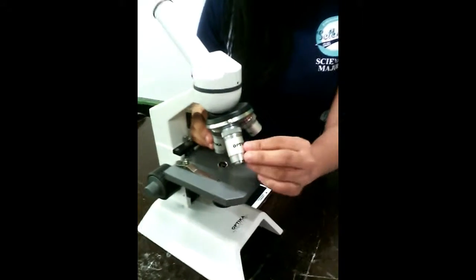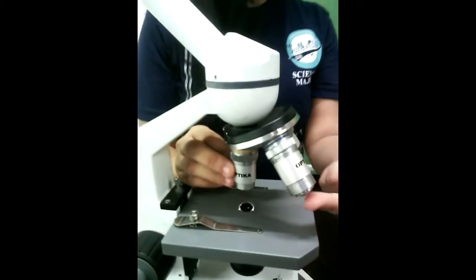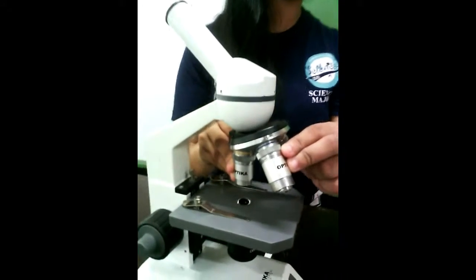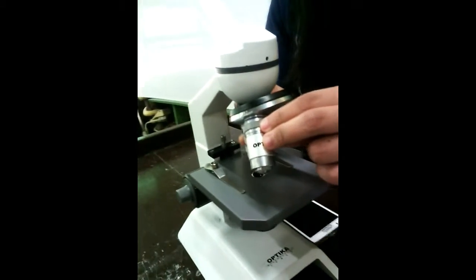The high power objective is a longer cylinder with a small lens opening. It is equipped with lenses of high magnifying power and is used to study the detailed parts of the specimen. It is focused by using the fine adjustment knob.